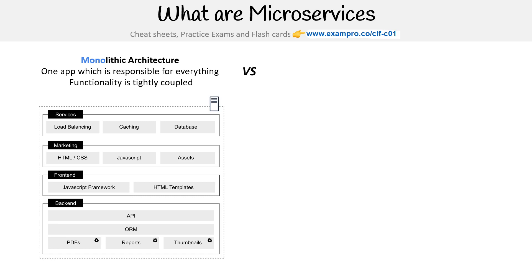Just to highlight — notice that there is a server, and everything is running on a single server, whether it's load balancing, caching, the database, maybe the marketing website, the front-end JavaScript framework, the back end with its API, the ORM connected to background tasks, things like that. And that's the idea of a monolith, and that's what a lot of people are used to doing.